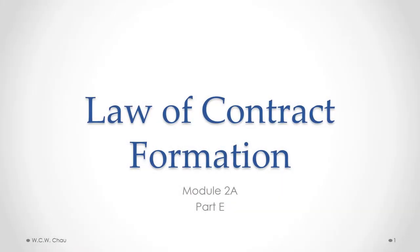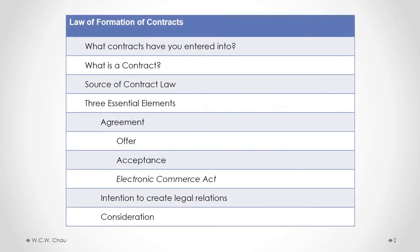Hello, it's Waylon Chow. This is the Law of Contract Formation, Module 2A, Part E. In this part, we will look at the second essential element of a valid contract, which is the intention to create legal relations.